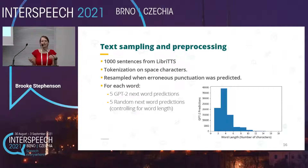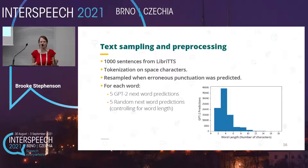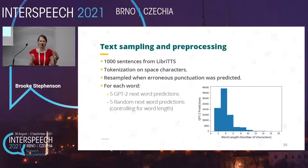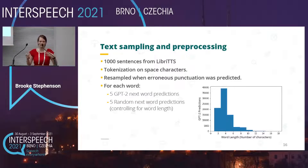We were careful to control for word length. GPT-2 tends to predict shorter words, as you can see in the distribution. In our previous work, we found that longer words had a larger impact on the internal representations of the TTS model than shorter ones, so we implemented a procedure so that the distributions matched in the two cases.